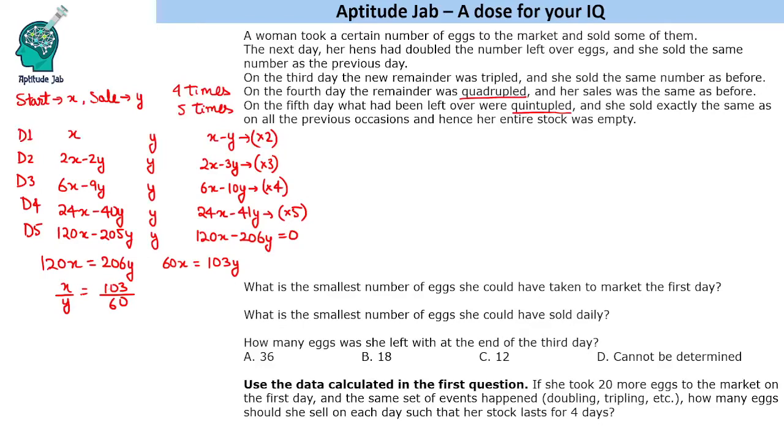These values can take multiple values. If we multiply by 2, that will be 206 and 120. It can be multiplied by 3, 4, 5, any number. But if you talk about the smallest number, the question asks what is the smallest number of eggs she could have had. So the smallest number possible is 103, and the smallest number she could have sold daily is 60.